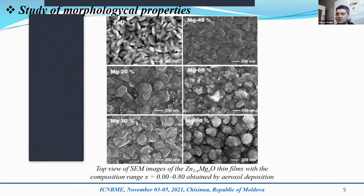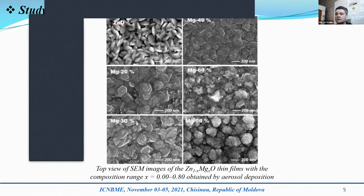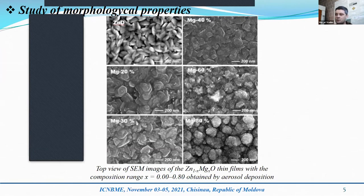The morphology of zinc-magnesium oxide films changes from hexagonal-type nanoneedles to formless nanograins with increasing the magnesium content from 0 to 0.8, as observed from SEM images. Hexagonal structures are formed with x-values from 0 to 0.2, while the crystallite form becomes more amorphous with further increase of magnesium content. This behaviour is explained by the increase of the concentration of magnesium oxide inclusions with cubic structure into the hexagonal wurtzite zinc-magnesium oxide films.